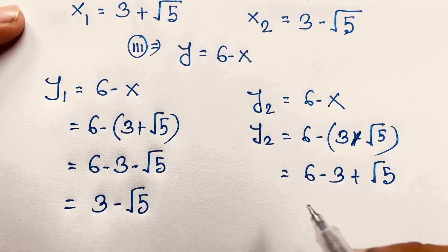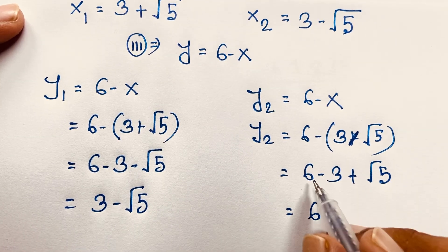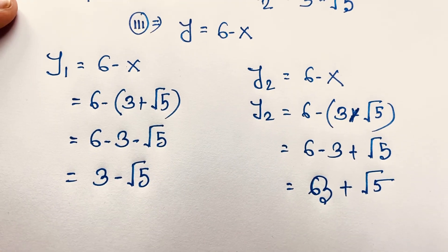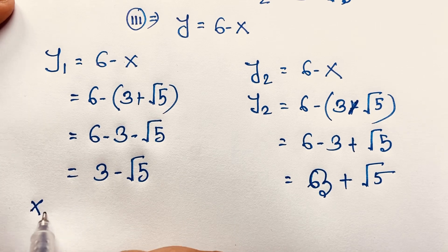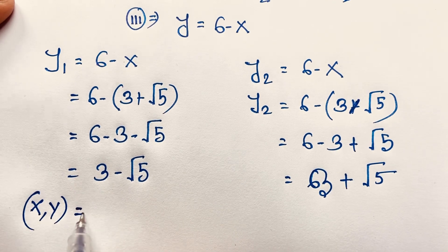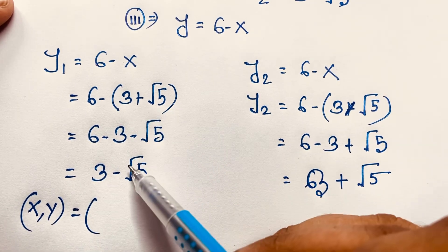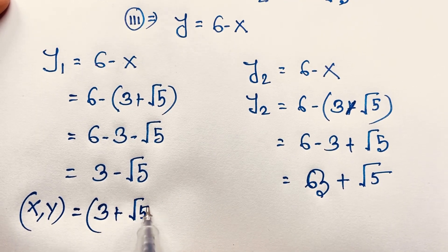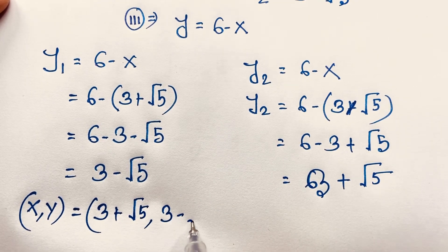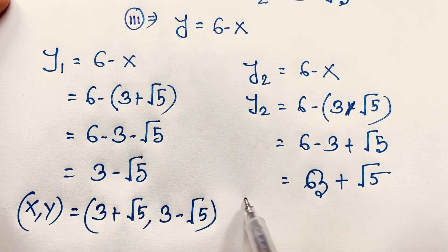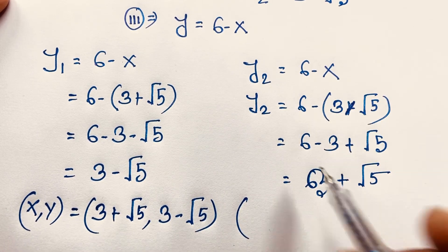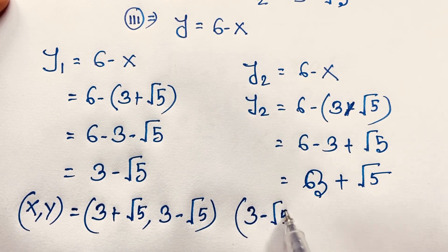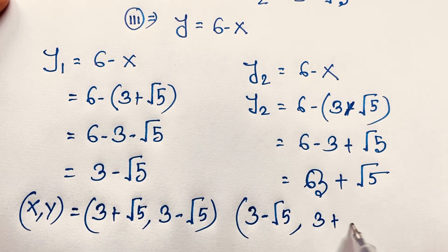So 6 minus 3 is 3, and with the signs we get our final answer. The solution pairs (x, y) are: when x equals 3 plus root 5, then y equals 3 minus root 5; and when x equals 3 minus root 5, then y equals 3 plus root 5.